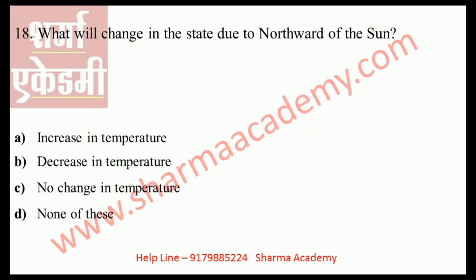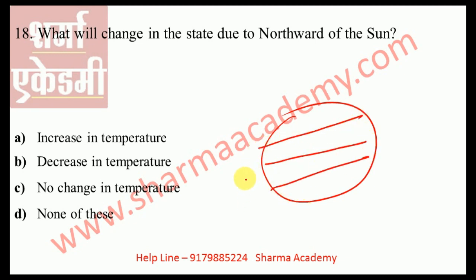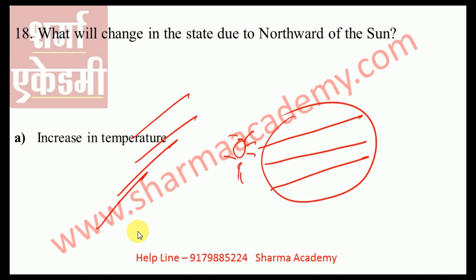The next question: what will change in the state due to the northward movement of the sun? Looking at the diagram showing the equator, Tropic of Cancer, and Tropic of Capricorn — as the sun moves northward, the answer is definitely increase in temperature. After March 21st, the temperature in the northern hemisphere begins to rise. Hence temperature in north Madhya Pradesh rises quickly, mainly in districts like Gwalior, Morena, and Datia, though southern MP is relatively less hot.